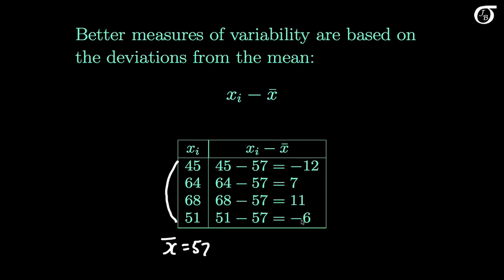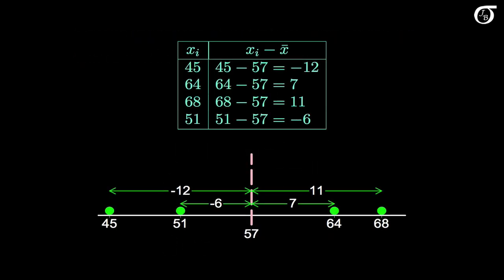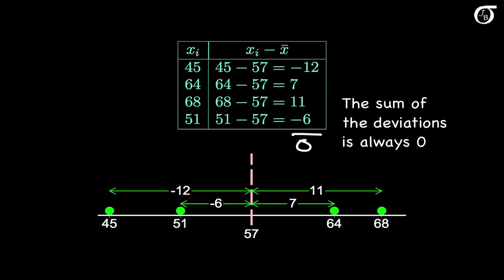Let's plot those and have a look. Here are the 4 observations in a dot plot; the mean of 57 is indicated by a line. We can see that 45 is 12 units less than the mean, 51 is 6 units less, 64 is 7 units greater, and 68 is 11 units greater. The deviations are the signed distance from the mean. Note that if we add all of these deviations, we end up with 0 — the negative and positive values cancel out. This is true for any data set: the sum of the deviations is always 0.